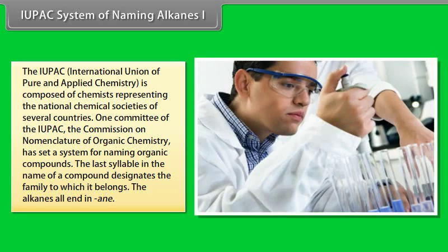The IUPAC, International Union of Pure and Applied Chemistry, is composed of chemists representing the national chemical societies of several countries. One committee of the IUPAC, the Commission on Nomenclature of Organic Chemistry, has set a system of naming organic compounds. The last syllable in the name of compound designates the family to which it belongs. The alkanes all end in -ane.